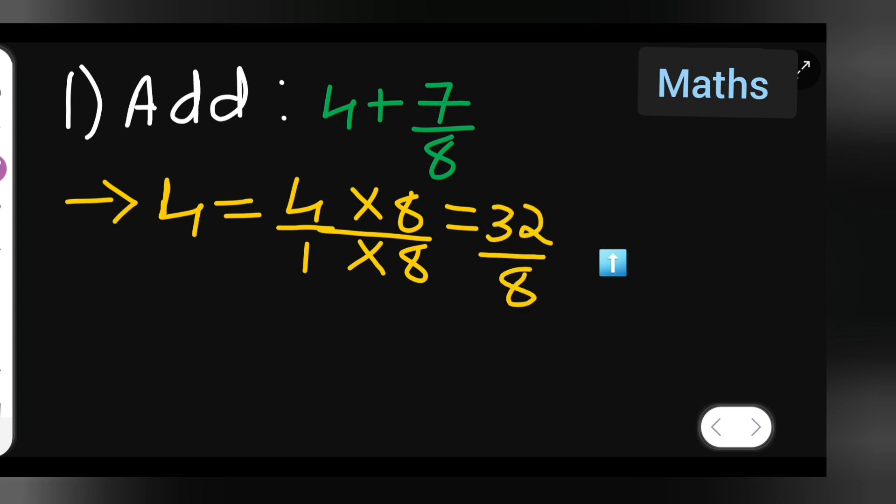We want the denominator to be same. So now take 7 upon 8 is equal to 7 upon 8 multiplied by 1. So that you will get again 7 upon 8. After that you will have to write down therefore 4 plus 7 upon 8 is equal to 32 upon 8 plus 7 upon 8.